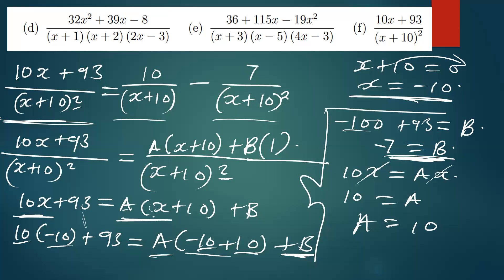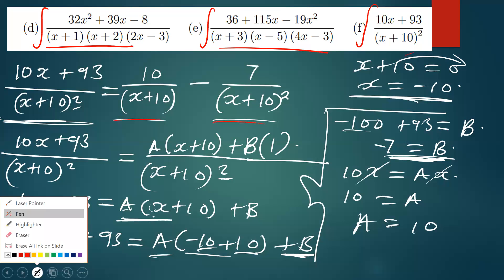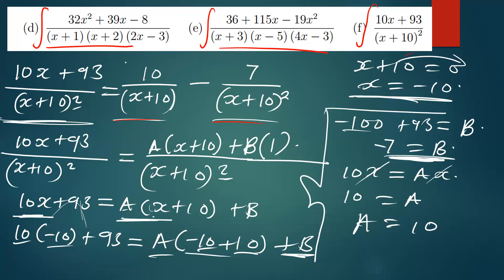When it comes to integration, some questions will ask you to integrate this same expression. You cannot integrate it as it is — you first have to resolve it into partial fractions, then integrate each part separately. Integrating this part is simple; the answer is just 10 ln of the absolute value of x plus 10. These things are very simple — trust me.